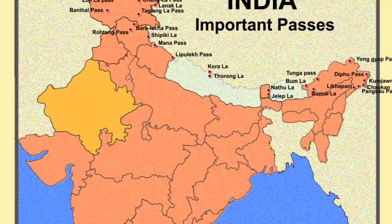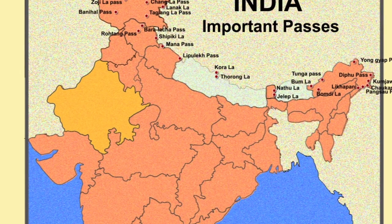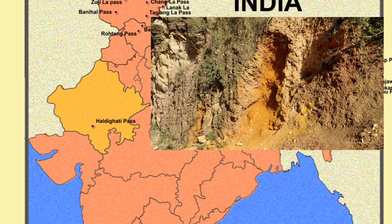Now we come to the state of Rajasthan. Here we need to learn Haldighati Pass, which lies on the Aravalli range. It connects two districts — Rajsamand and Pali — and is located at a distance of just 40 kilometers from Udaipur. The name Haldighati is believed to have originated from the turmeric-colored yellow soil of the area.